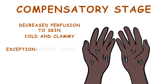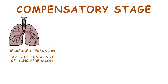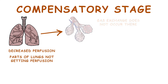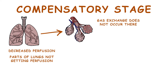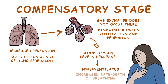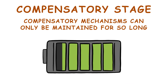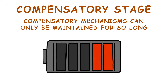The one exception is if the person is in septic shock — in this case, there is vasodilation in the skin, and it will be hot and flushed. Decreased perfusion results in parts of the lungs not getting perfusion, meaning gas exchange does not occur in these parts. This creates a mismatch between ventilation and perfusion, and blood oxygen levels decrease. To compensate, the person hyperventilates, increasing the rate and depth of their breathing. It is important to remember that the body can only maintain these compensatory mechanisms for a limited duration.